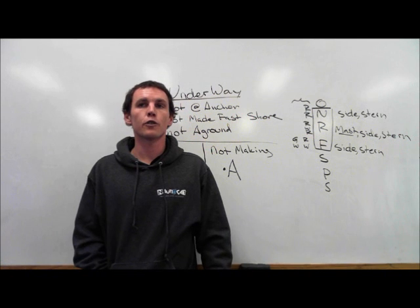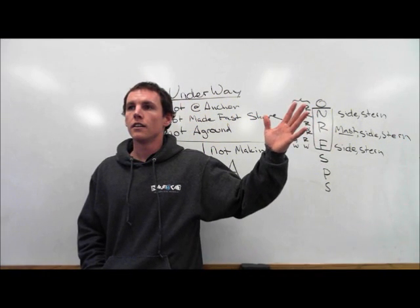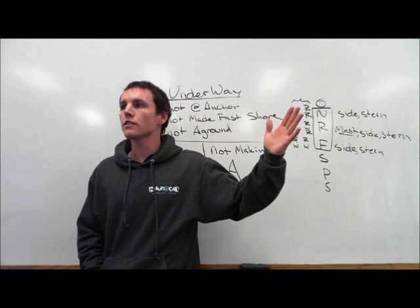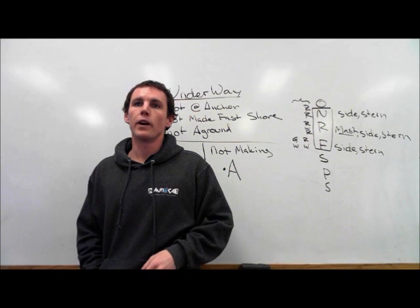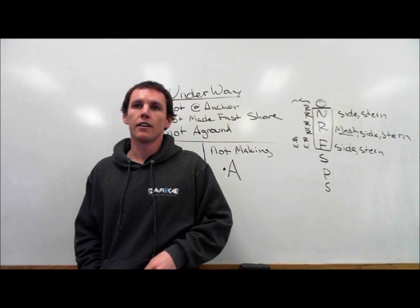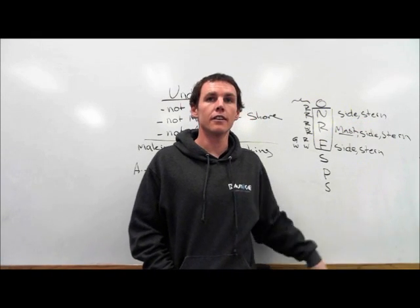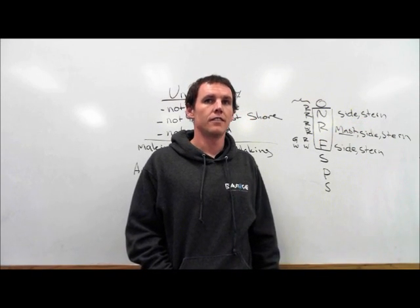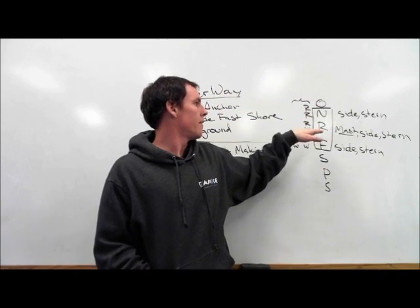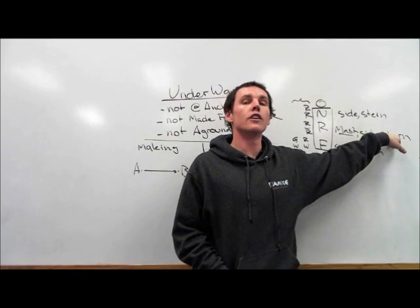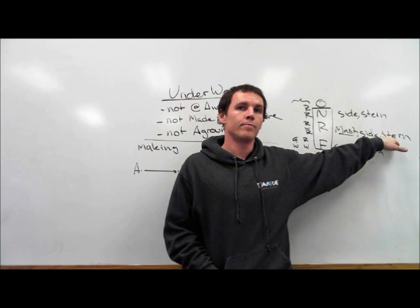You might see a question that reads: a vessel restricted in its ability to maneuver puts what lights on when making way through the water. And you get these choices. Side or stern, mast, side or stern. Red, white, red. So it's mast, side and stern in addition when making way through the water.